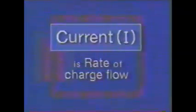An important characteristic of an electrical circuit is the rate at which the charge flows through it. The rate of charge flow is called current and is measured in amperes. A current of one ampere means that one coulomb of charge passes a specific point each second.